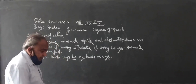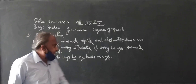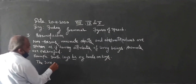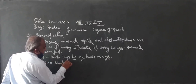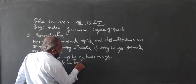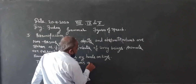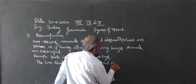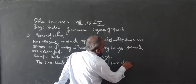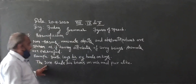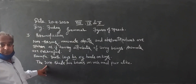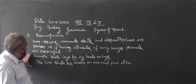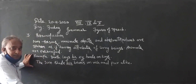For example, here is another example: 'The sun sheds his beams on rich and poor alike.' The sun is personified — it is a lifeless thing. When we use the pronoun 'his,' that means it is personified.